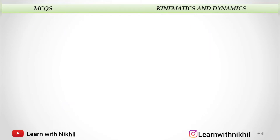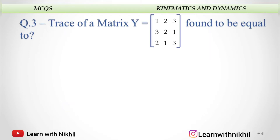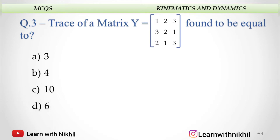Next question: trace of a matrix Y given is found to be equal to what? To calculate the trace of a matrix, you simply add the diagonal elements. So this is 3 plus 2 plus 1, that is 6. Adding the diagonal elements gives you 6, so the answer is 6.